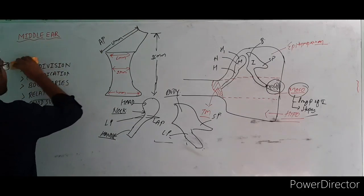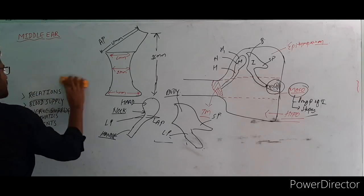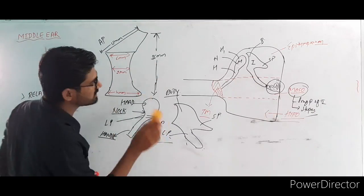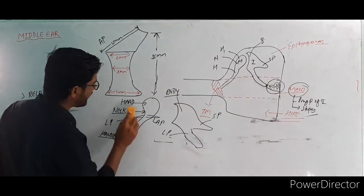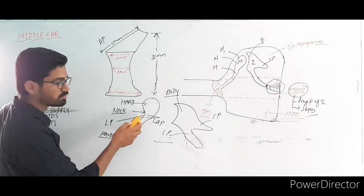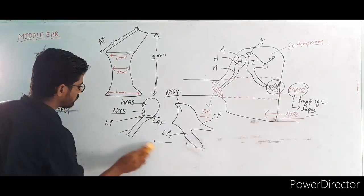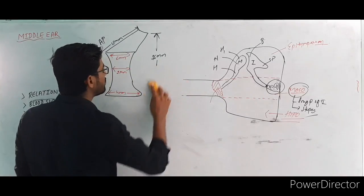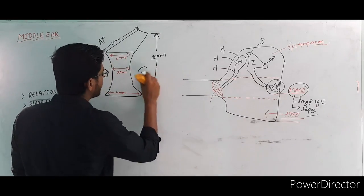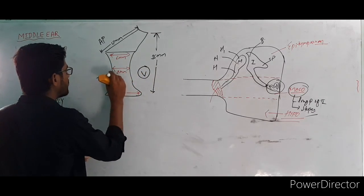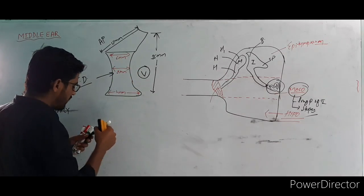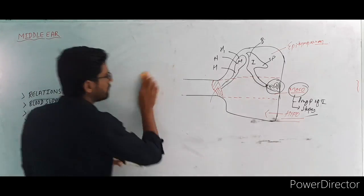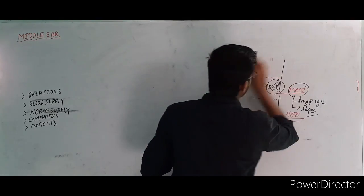To summarize the measurements: the anteroposterior diameter is 15 mm, the vertical diameter is 15 mm, and the transverse diameter resembles a biconcave lens shape — like an RBC — with dimensions of 6 mm at widest, 2 mm and 4 mm at the narrower ends. Now we will move on to the medial wall of the middle ear.